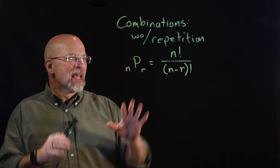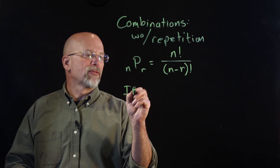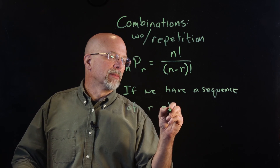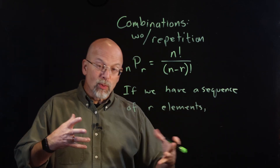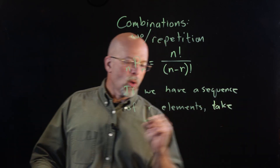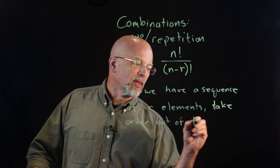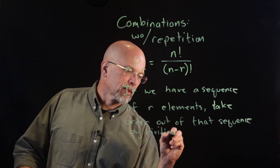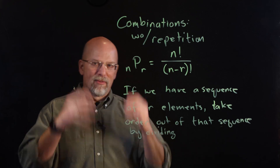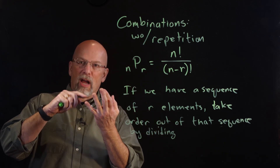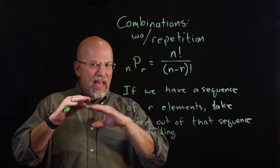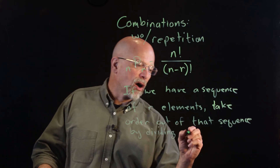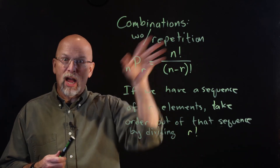What we're going to do in this lesson is take the order out. If we have a sequence with order of r elements, we can take the order out by dividing by the number of possible sequences of those elements. For example, if I have three items, they can be arranged in 3 times 2 times 1, or 6 ways. So if I have six possible orderings of the same three elements, I divide by 6 — I divide by r factorial. This is called r combinations.